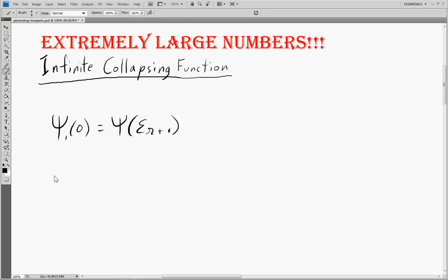So in this case, the Bachmann-Howard ordinal. If we had, let's say, ψ₃(0), this would equal ψ₂(ε_ω₂+1). And we can even write down a generalized equation for this: ψ_a(0) is equal to ψ_{a-1}(ε_{ω_{a-1}+1}).